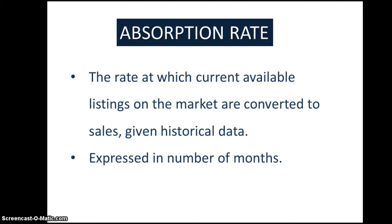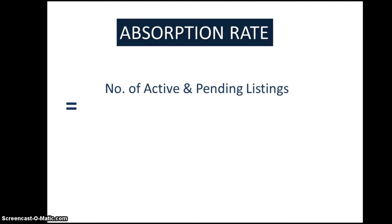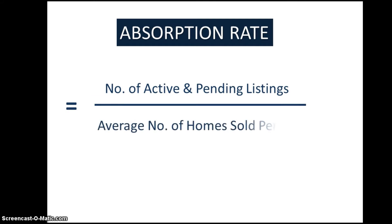The formula for absorption rate is very simple. There are two measures needed to calculate it. The first is the number of active and pending listings on the market — in short, the number of unsold listings for a given market. This is divided by the second measure, which is the average number of homes sold per month. It's that simple.